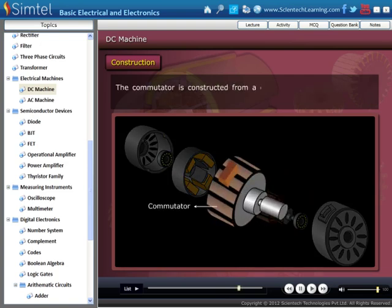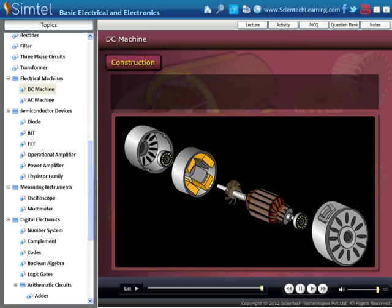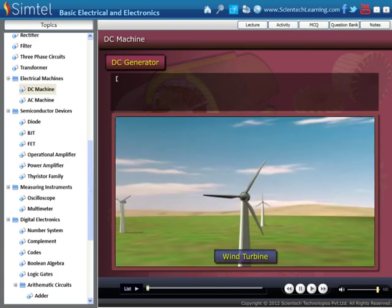Here, the commutator is constructed from a copper ring split into segments with insulating material between the segments. Brushes riding against the commutator segments carry the power of the outside circuit.